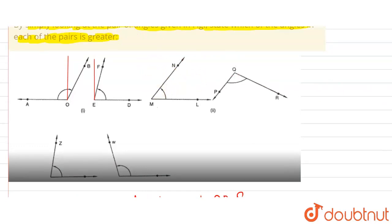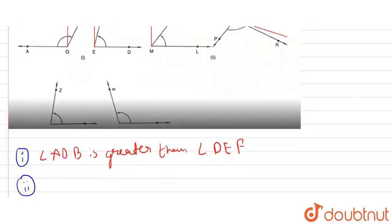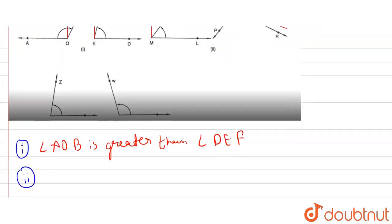Now let's see the second pair. Here also let's draw an imaginary 90 degrees so that we can identify which one is greater. Suppose this is 90 degrees for angle NML and this is 90 degrees for angle PQR. We can see that the difference between 90 degrees and angle PQR is less than the difference between 90 degrees and angle NML, therefore angle PQR is greater.